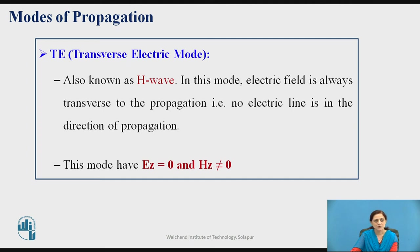The first mode is the transverse electric (TE) mode, also called the H-wave. In this mode, the electric field is always transverse to the direction of propagation — that is, no electric field component exists in the direction of propagation. If the direction of propagation is the z-direction, the z-component of the electric field equals zero, while the magnetic field component is present.